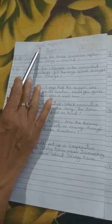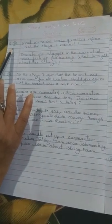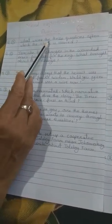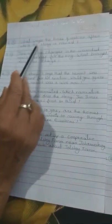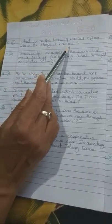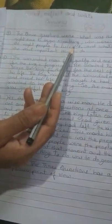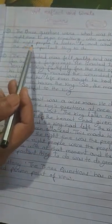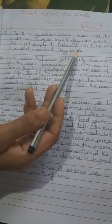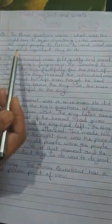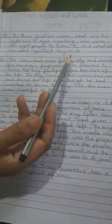Now students will discuss, read, reflect and write questions. So question number 5, what were the 3 questions after which the story is named? Then answer number 5, the 3 questions were: what was the right time to begin something? Who were the right people to listen to? And what was the most important thing to do?